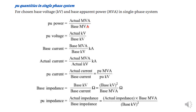The per-unit value is calculated as actual divided by base. To find the base current, we use the power formula P = V × I, so I = P/V. With P in MVA and V in kV, dividing gives the base current in kilo-amperes. Similarly, actual current equals actual MVA divided by actual kV, in kilo-amperes. Per-unit current is actual current divided by base current.